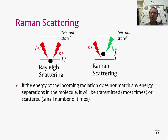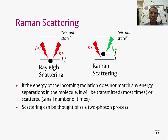Scattering happens when the energy of the incoming radiation does not match any energy separations in the molecule. In fact, most of the time, if the light doesn't match any energy gaps, it's just transmitted and goes straight through the sample. But occasionally the light will be scattered. Scattering can be thought of as a two-photon process — an incoming photon, and then a scattered photon.